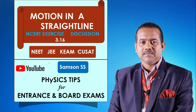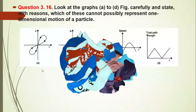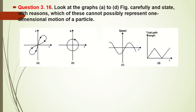Hi students, we can discuss the 16th question of NCERT exercise of the chapter Motion in a Straight Line. Look at the graphs A to D, figure carefully, and state with reasons which of these cannot possibly represent one-dimensional motion of a particle.